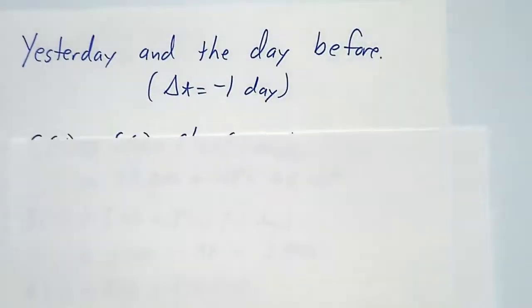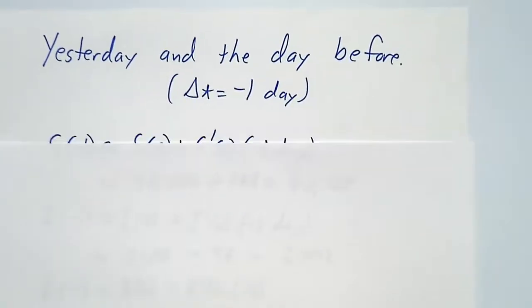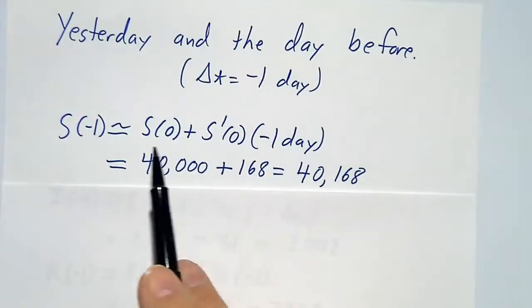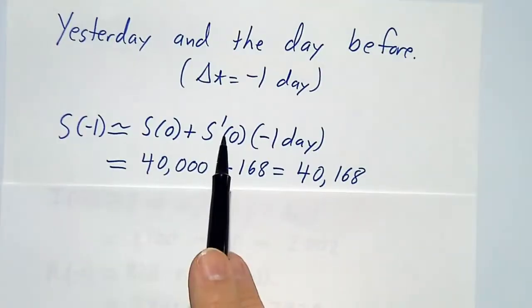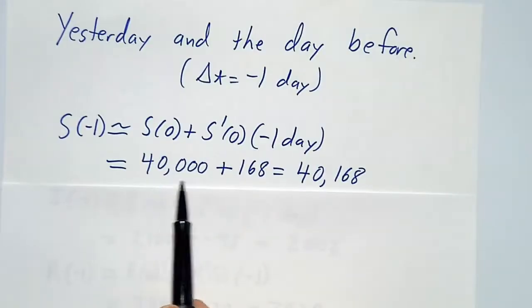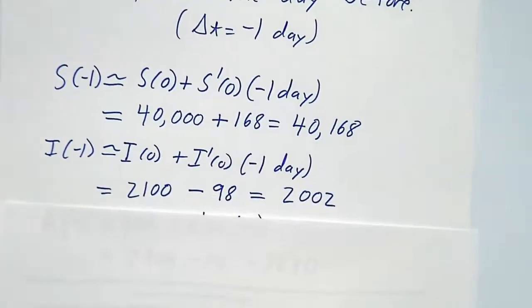We can also do the same thing going backwards. If we want to understand what things were like yesterday, we say, hmm, right now we're losing potentials at a rate of 168 per day and we've got 40,000, so we must have had 168 more of them yesterday. We've got 2,100 actives and we're gaining them at 98 per day, so there must have been 98 fewer of them yesterday.